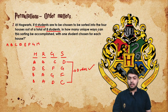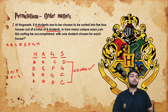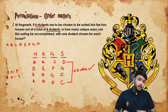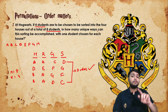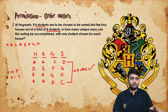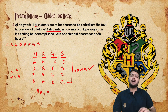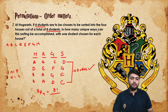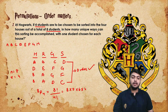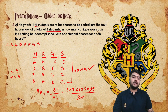Here order matters. There are 8 total students, n is 8, out of which you have to select 4, so r is 4. Whenever you select r items out of n items and order matters, you apply the formula for permutation. So 8P4: NPR is n factorial upon (n minus r) factorial, giving 8 factorial upon 4 factorial. 8 factorial = 8 × 7 × 6 × 5 × 4 factorial upon 4 factorial — this cancels out. 8 × 7 × 6 × 5 = 1680.